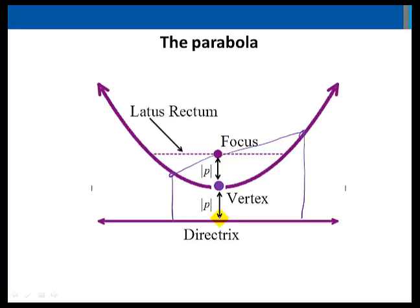The latus rectum is the line segment parallel to the directrix which contains the focus. One thing to note about the latus rectum, its length is the absolute value of 4p. That will help us in graphing to have a more accurate sketch of our parabolas.